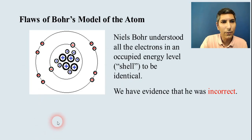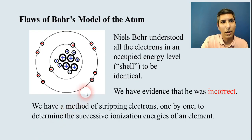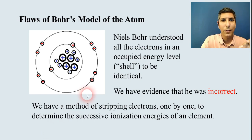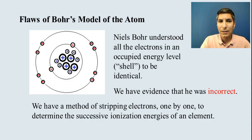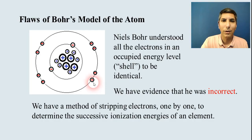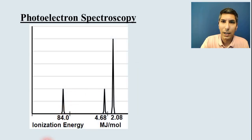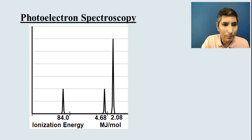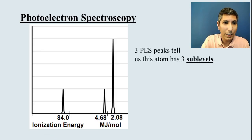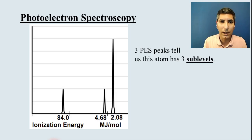If we take this atom and run it through an object called a photoelectron spectroscope, we can strip these electrons one by one away from the atom to determine the successive ionization energies — how much energy is required to strip each electron away. And if we do that, we get a spectrum that looks like this. We don't get two peaks, but we get three peaks, and this tells us that this atom has three sub-levels.